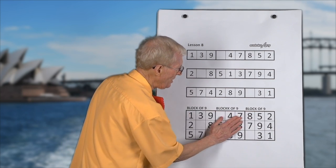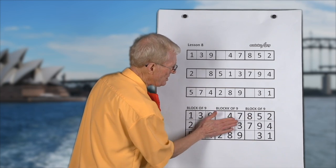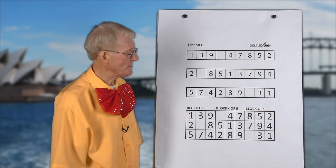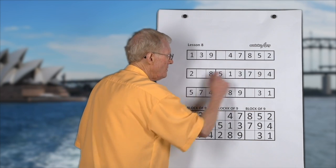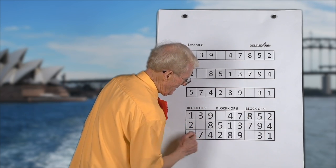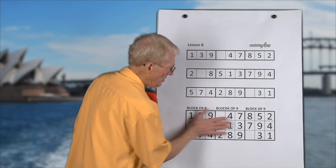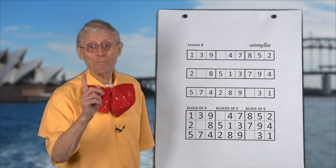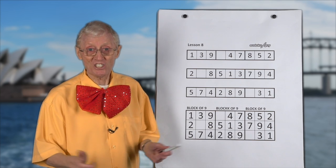These three blocks when they go across the page like this we call them horizontal blocks. This is a row and when they are joined up to make blocks that go across the page we call them horizontal blocks. And that's important to know for the next sessions too.